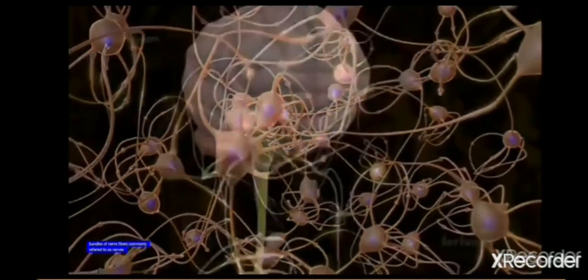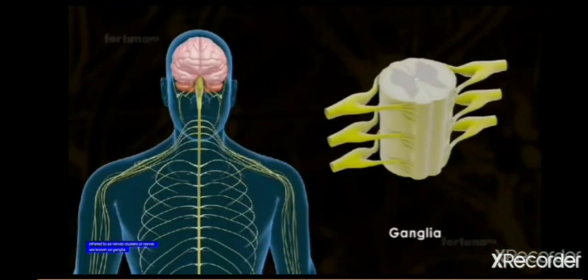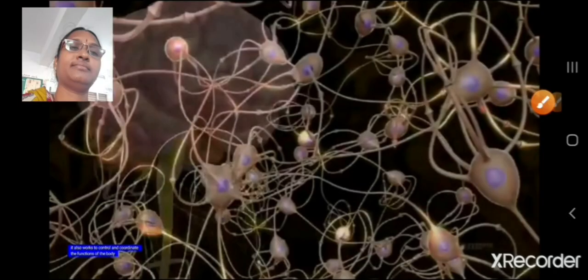Bundles of neurons form the nerves, and the nerve clusters form the ganglion. So, children, many nerve cells together form the nerves, and clusters of nerves together form the ganglion.